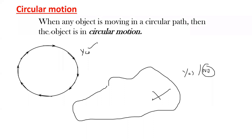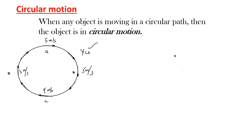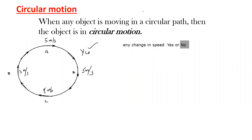For example, if the speed is 5 meters per second at point A, at point B it is also 5 meters per second, at point C it is also 5 meters per second, and at point D it is also 5 meters per second. The question is: is there a change in speed? The speed is not changing, so we say there is no change in speed.